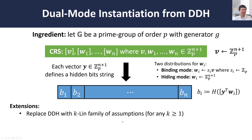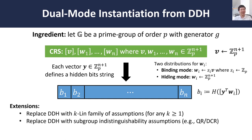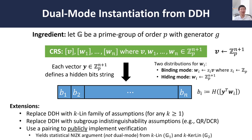There are several ways that we can extend this. For instance, we can replace DDH with the general K-Lin family of assumptions for any K ≥ 1, noting that DDH is the same as the 1-Lin assumption. We can also replace the DDH assumption with subgroup indistinguishability type assumptions, giving us dual-mode designated verifier NIZKs from quadratic residuosity or the decisional composite residuosity assumptions. We can also use a pairing to publicly implement this verification algorithm, obtaining a statistical NIZK argument. Unfortunately, due to technical and algebraic details, this does not give us a full dual-mode construction with the full expressivity of the Groth-Ostrowski-Sahai construction. But because we can base hardness on a weaker assumption — a K-kernel linear assumption in one of the subgroups — this gives an assumption that is qualitatively weaker than those previously used to construct statistical NIZKs in a publicly verifiable CRS model.